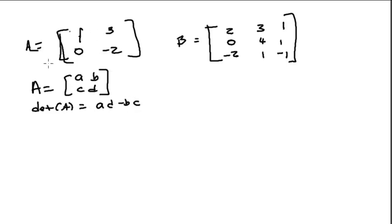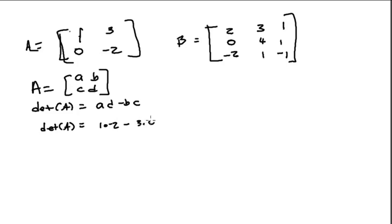So in this example where A is the matrix [1, 3, 0, -2], the determinant of A is 1 times negative 2 minus 3 times 0, which is negative 2. So it's just AD minus BC.